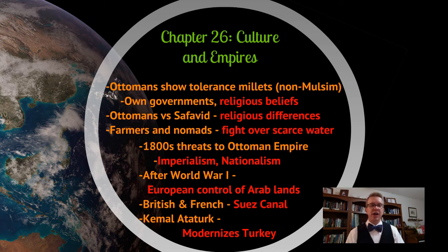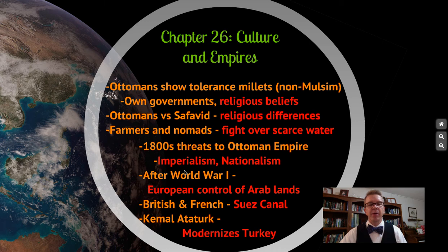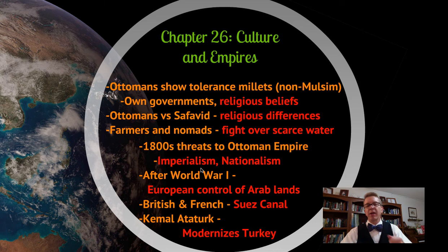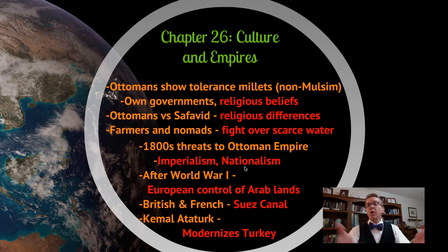In the 1800s, threats to the Ottoman Empire emerged both internally and externally. One external threat was imperialism — Europeans coming in and taking over other parts of the world for raw materials and markets for finished goods, strengthening their national economies and military. That pride in country is nationalism. If you're under imperial control and want your own country, that's also a form of nationalism. After World War I, Arabs were unhappy because Europeans maintained and even gained control of Arab lands.